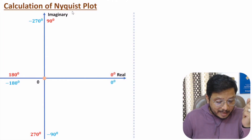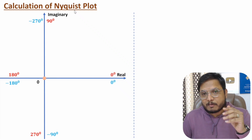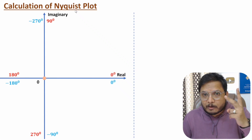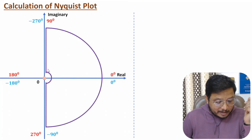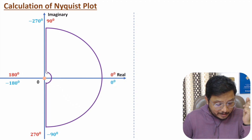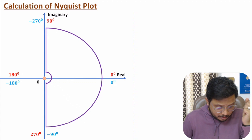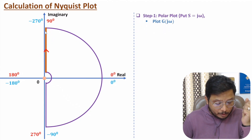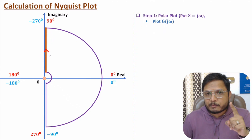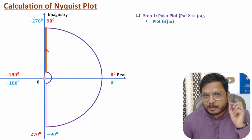Now I will explain the calculation of the Nyquist plot. The Nyquist plot consists of the polar plot, inverse polar plot, and Nyquist contour. In total, four lines are present. The first line is the polar plot, and to obtain it we substitute s equals j omega in the transfer function.